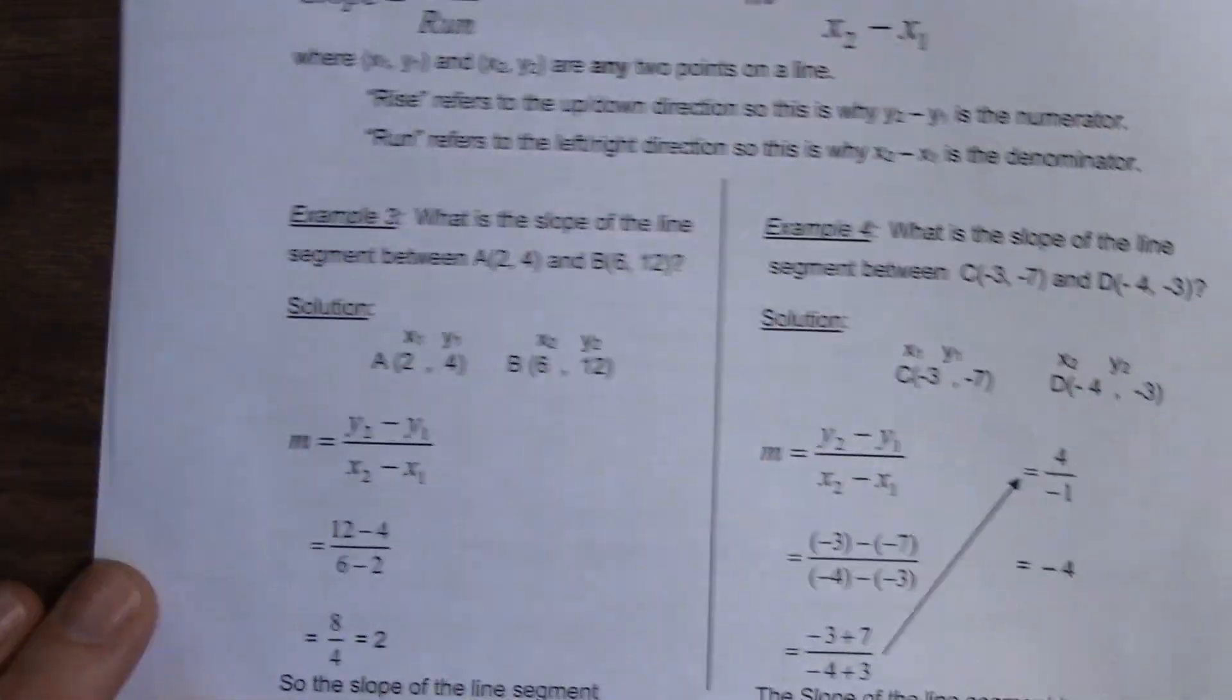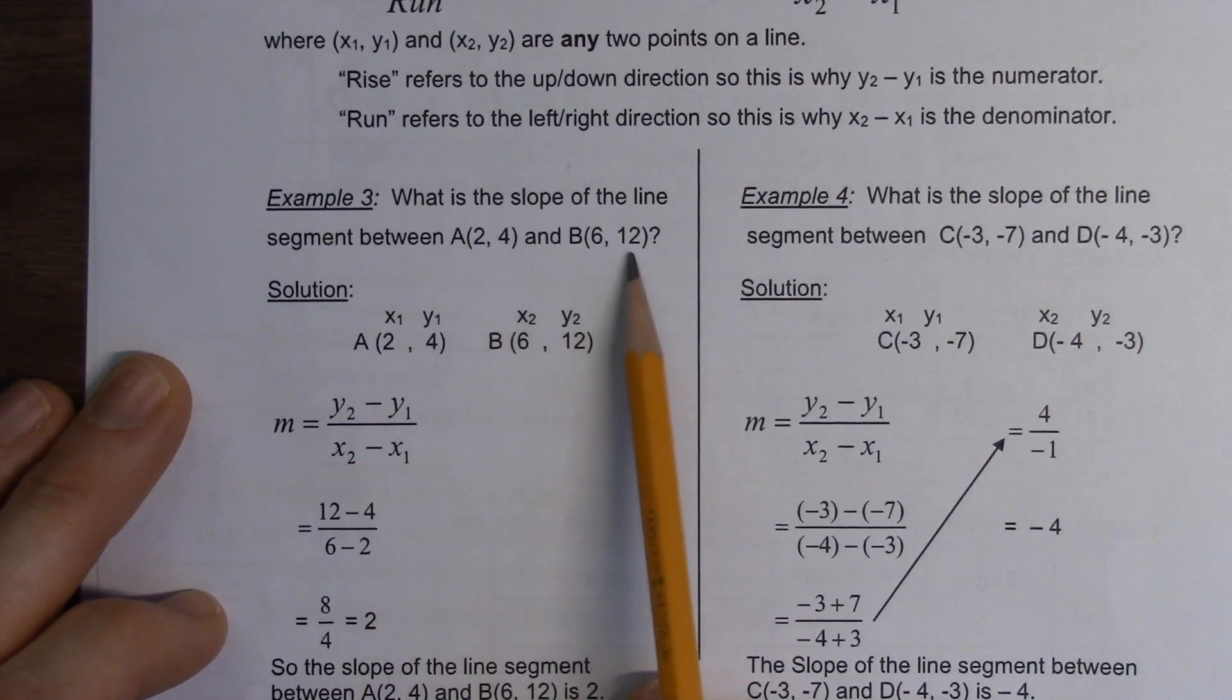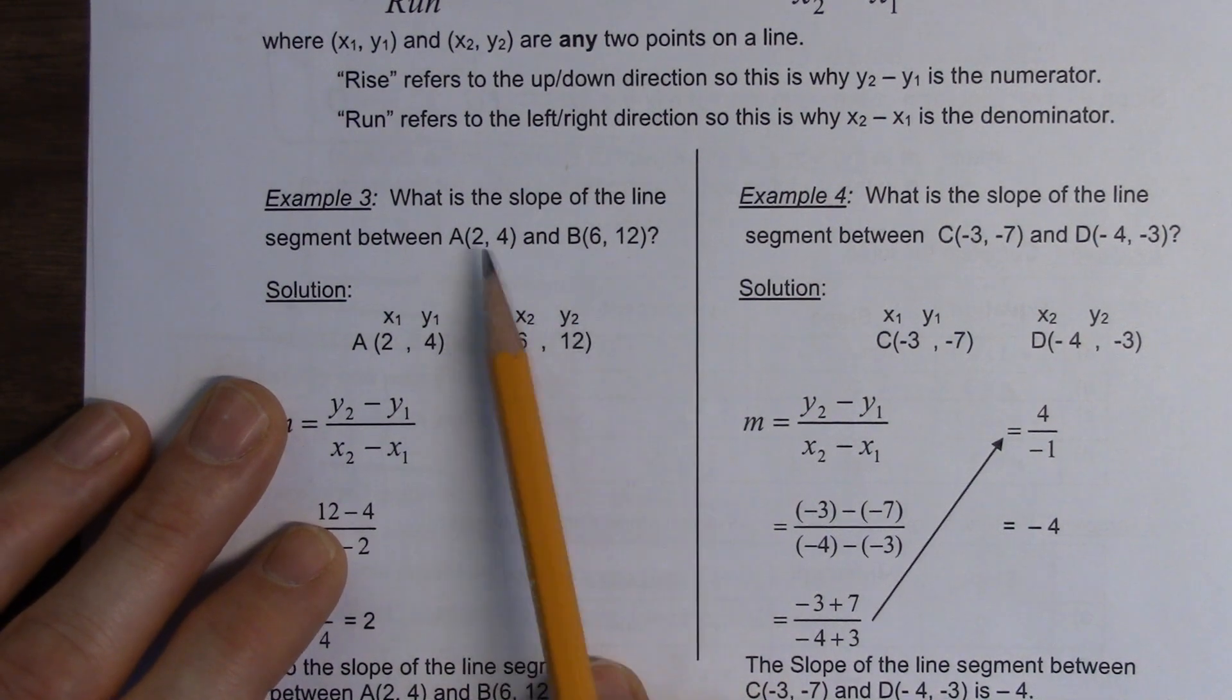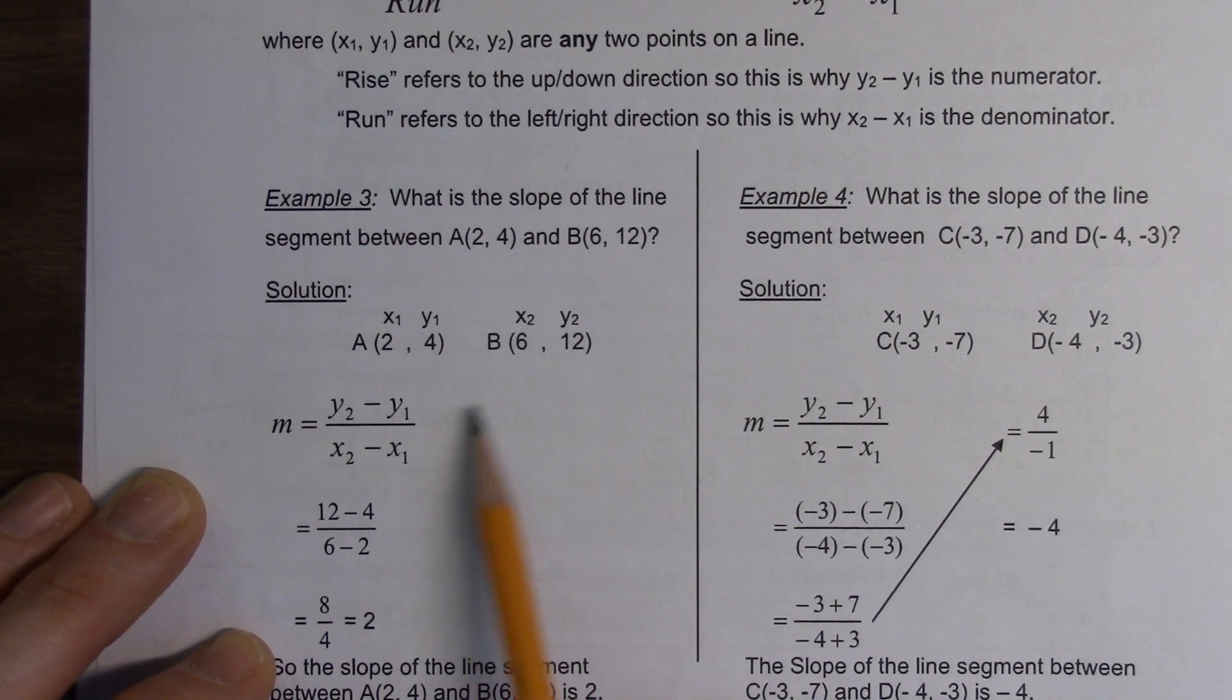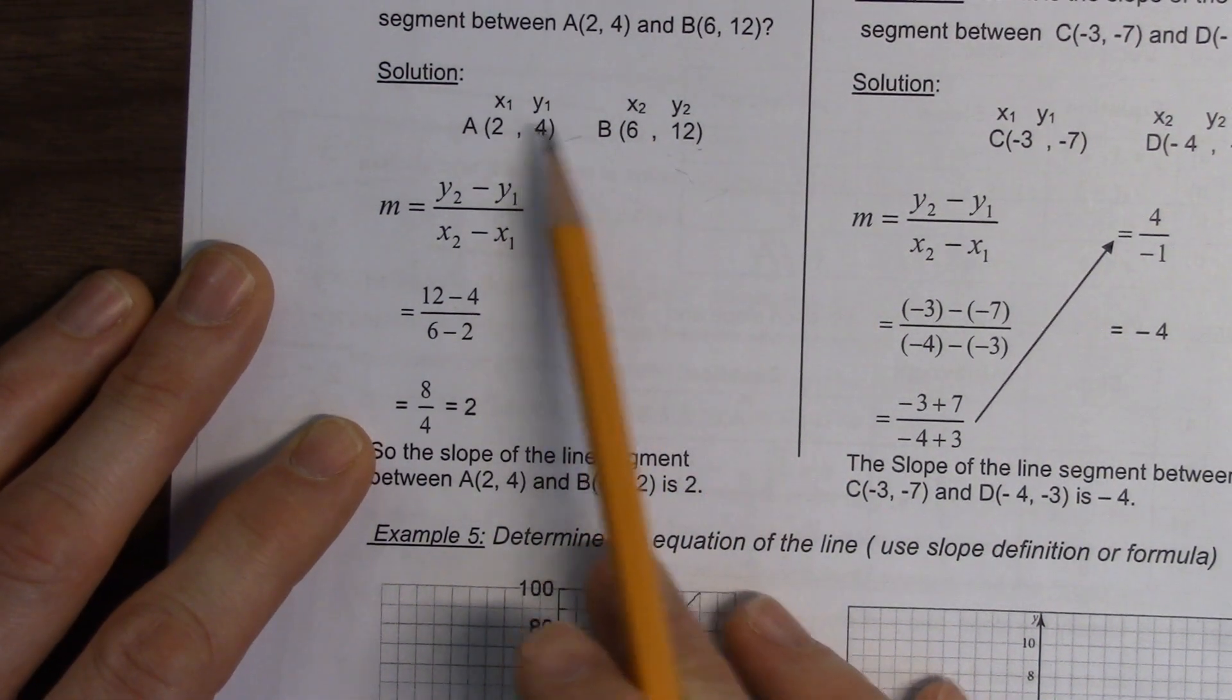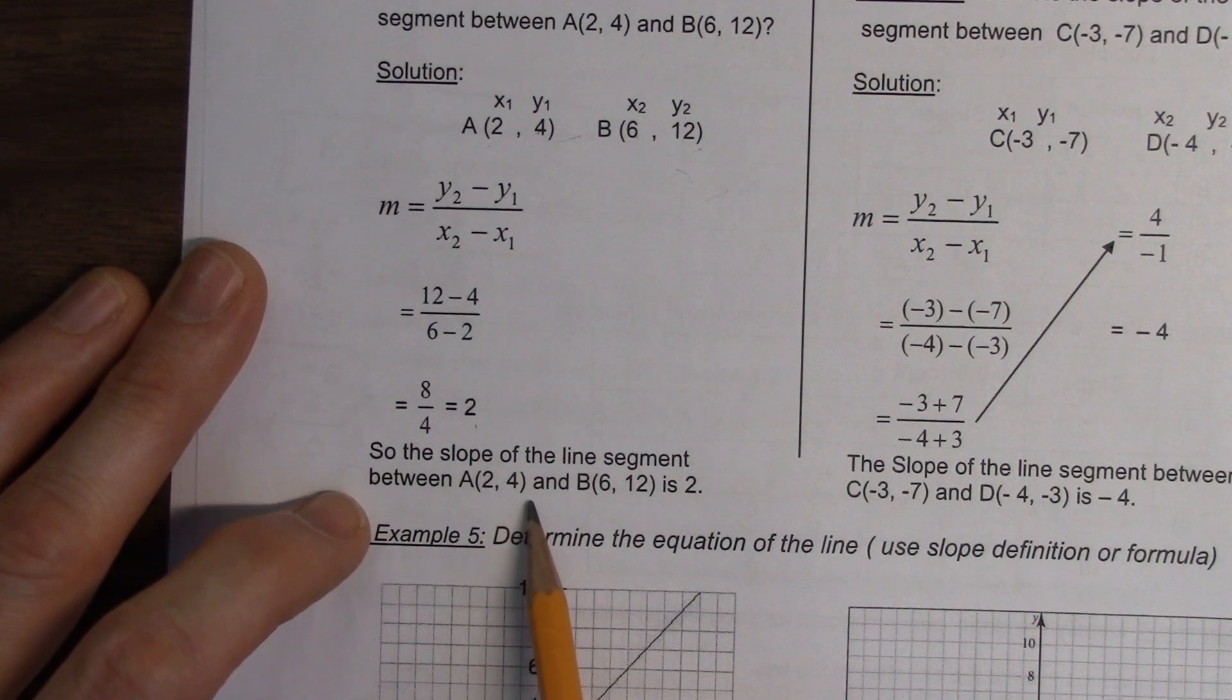Example 3. What is the slope of the line segment between... I brought an extra. Okay, thanks. 2, 4 and B, 6, 11. The slope of the line between these two points. Okay, so here's my first point, X1, Y1. My second point, X equals 6, Y equals 12. Plug it into my formula, 12 minus 4. Right? So I get Y2 minus Y1, X2 minus X1. I get 8 over 4 equal to 2. So the slope of the line segment is 2.